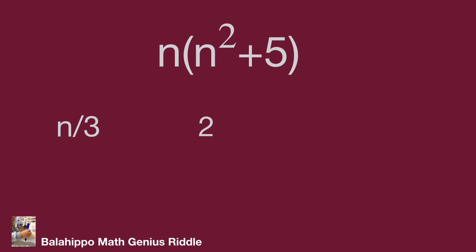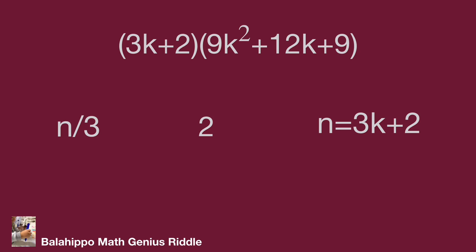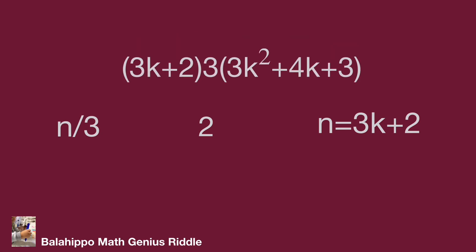When n divided by 3 has remainder 2, then n equals 3k plus 2. Substituting into n(n² plus 5) gives (3k+2) times ((3k+2)² plus 5). Expanding and simplifying the second term gives 9k² plus 12k plus 9. Factoring out 3 gives (3k+2) times 3 times (3k² plus 4k plus 3), so it is divisible by 3. We have proved that both 2 and 3 are factors of n cubed plus 5n, so n cubed plus 5n is divisible by 6.